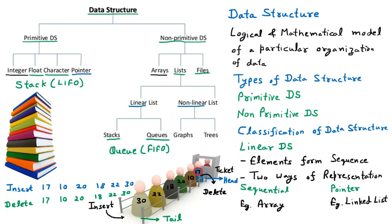To summarize, the queue is a FIFO data structure and the stack is a LIFO data structure. In the stack, deletion happens in reverse order of insertion, while in the queue, insertion and deletion follow the same sequence. In a queue, insertion is always at the tail and deletion at the head. In a stack, the technical names are push for insertion and pop for deletion.